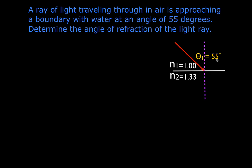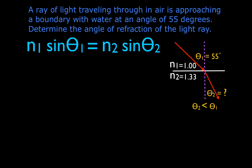Before solving, I think ahead: the light is coming from a material with a lower index of refraction and crossing into a material with a higher index of refraction. I know that light going from a lower to a higher index of refraction is going to bend towards the normal line. So the angle of refraction must be less than the angle of incidence — less than 55 degrees. I draw the refracted ray bending toward the normal, and now I'll use Snell's Law to solve for theta2.